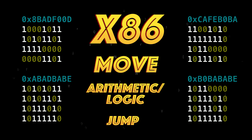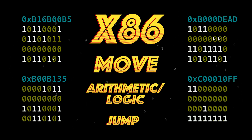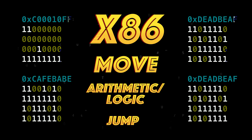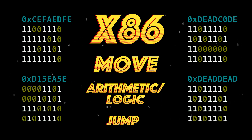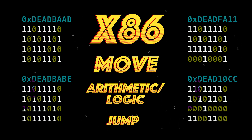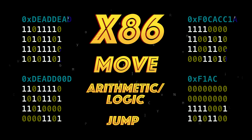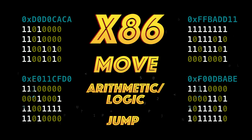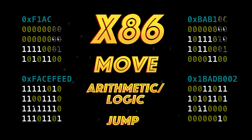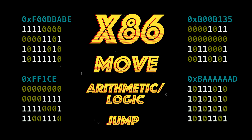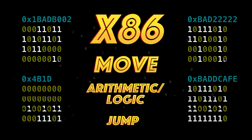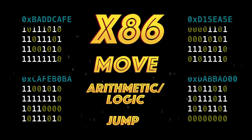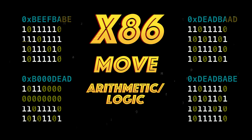Then we need jumps — we need to be able to execute programs non-sequentially. These are needed to perform if-else constructs, loops, and functions. You can find online a cheat sheet with the most important instructions, and we will see them while writing assembly code.